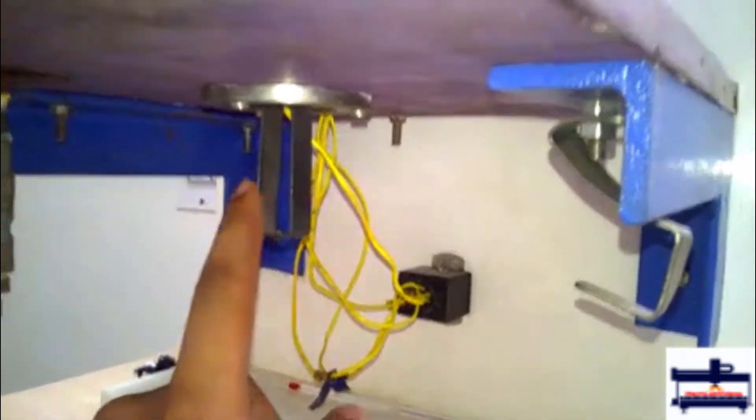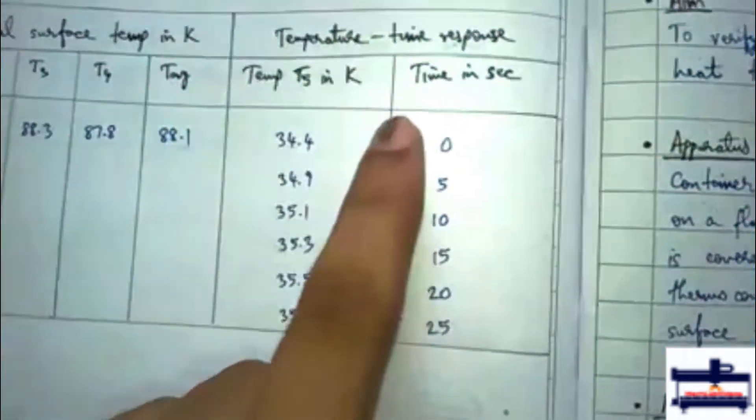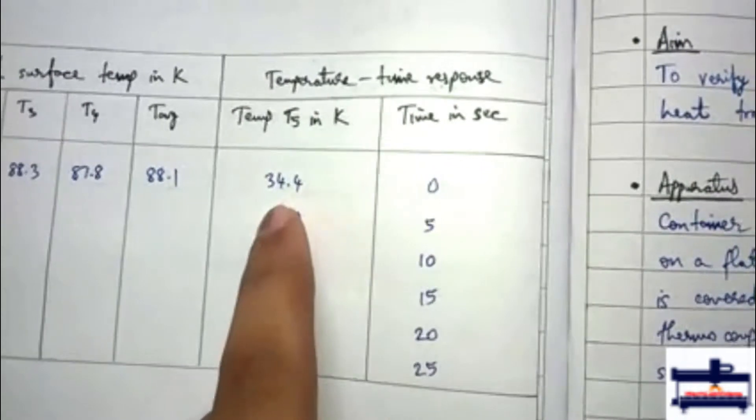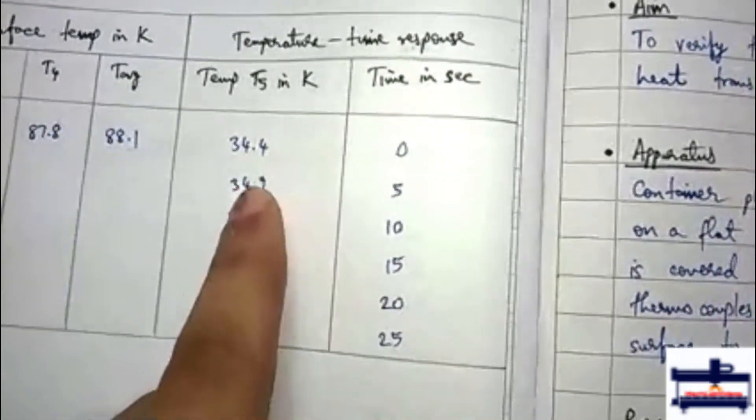After noting down the four temperatures this disk is inserted inside, and then the moment it is inserted the temperature of the disk at T equals zero is noted down and the timer is set. So at every five second interval the temperature rise on the disk is measured.